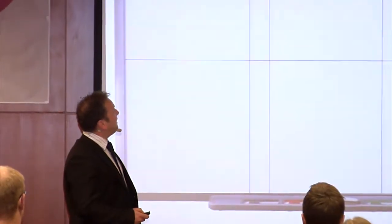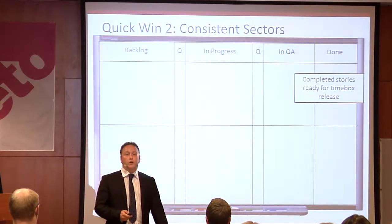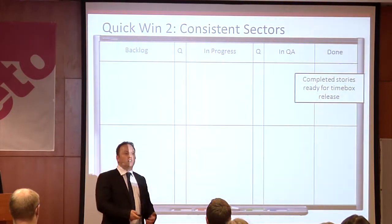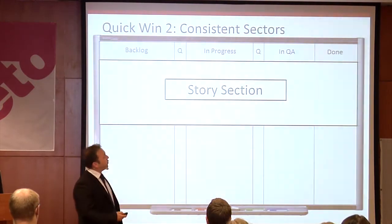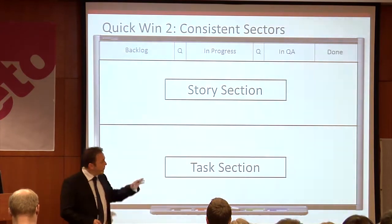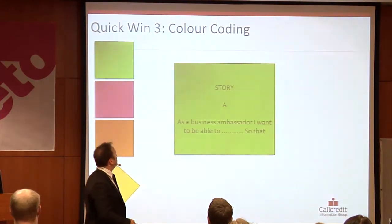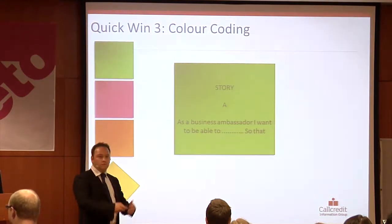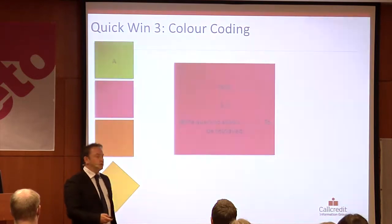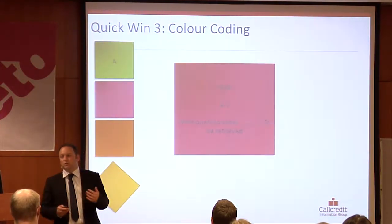The next thing is to have consistent sectors. I'm not just talking about swim lanes - try to use consistent terminology, whether you call areas 'in progress' or 'work in progress', stick to one name. What we like to do is differentiate stories from tasks. We do this two ways: by putting stories in the upper half of the whiteboard and tasks in the lower half, and also by colour coding. A story represents a user-facing feature, whereas a task is something a story is broken into - something more technical people are interested in.